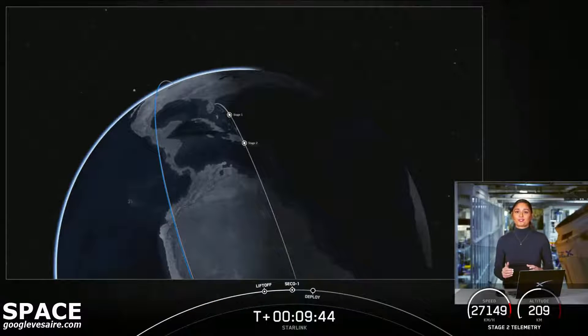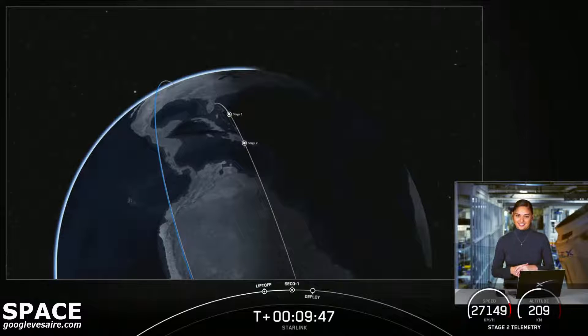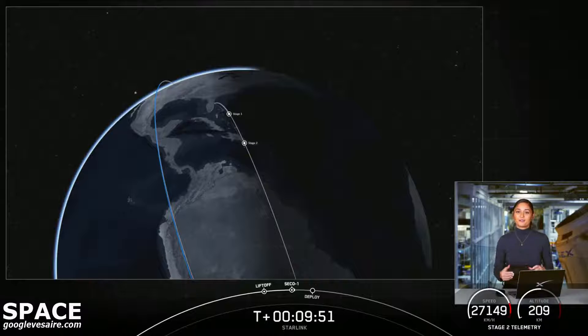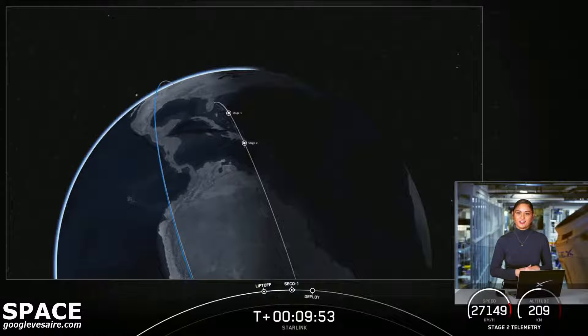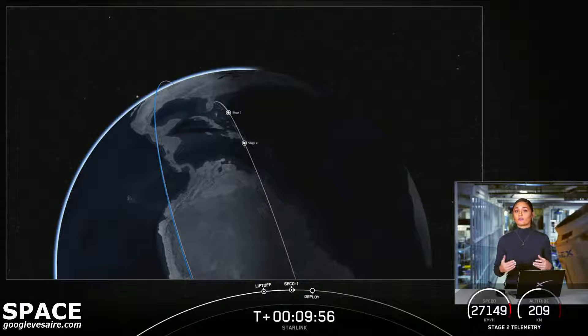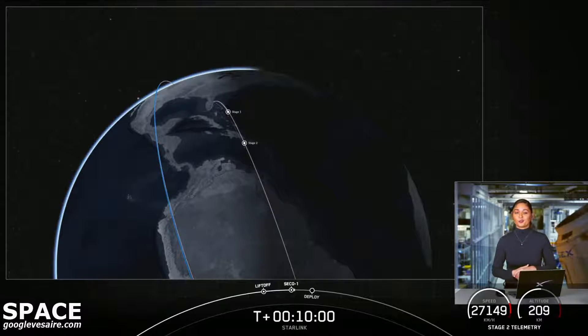Today's launch marks the first east coast launch to a 53 degree inclination, and we're flying this trajectory to increase recovery weather availability for both the booster and fairing halves during the winter months.